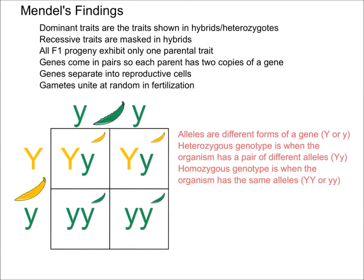A heterozygous genotype is when the organism has a pair of different alleles. This yellow pea right here, with one capital Y and one lowercase y, would be a heterozygous organism.